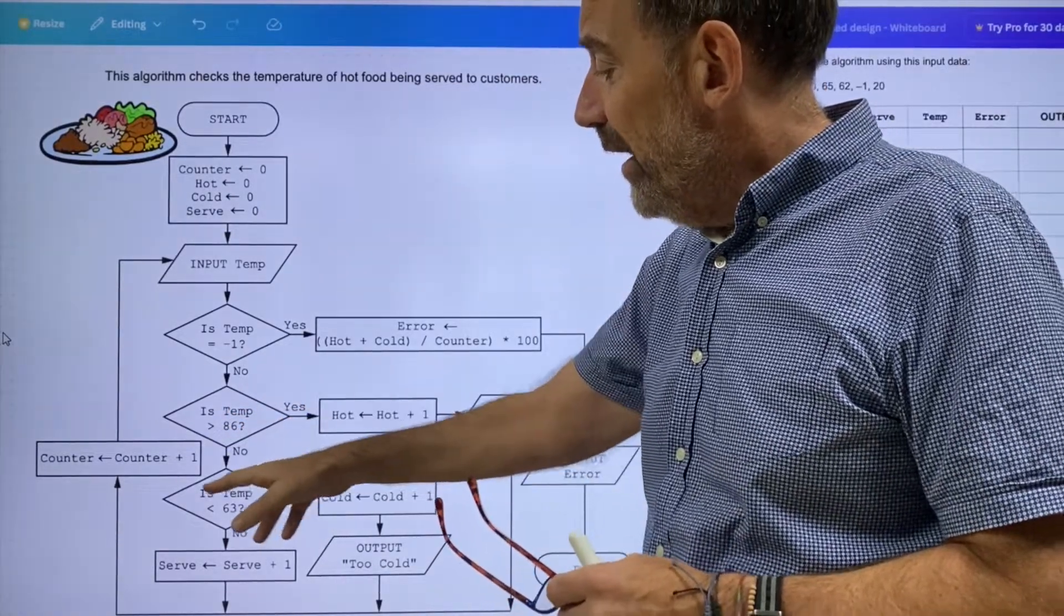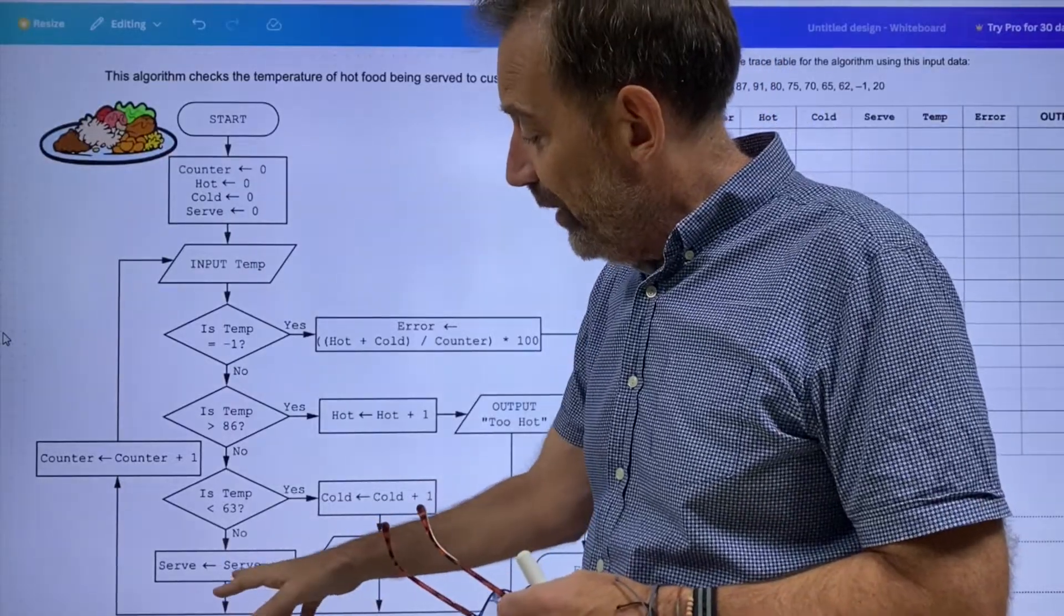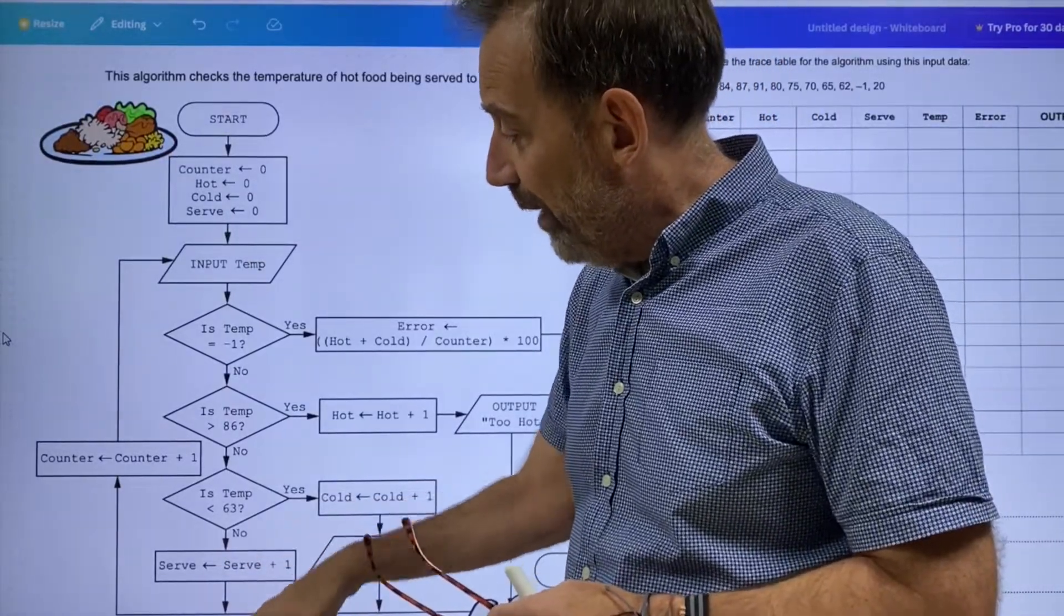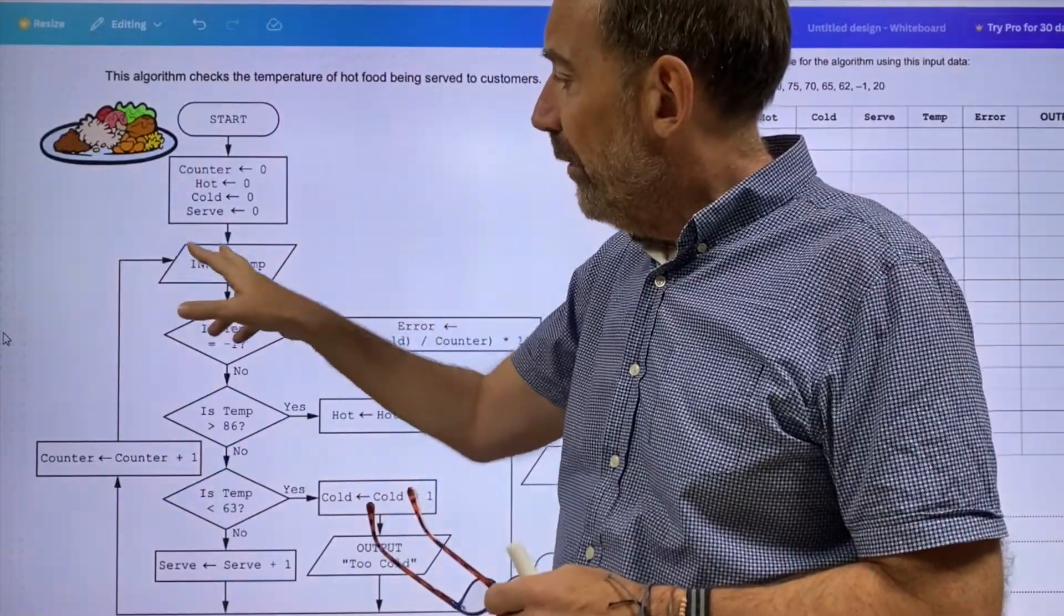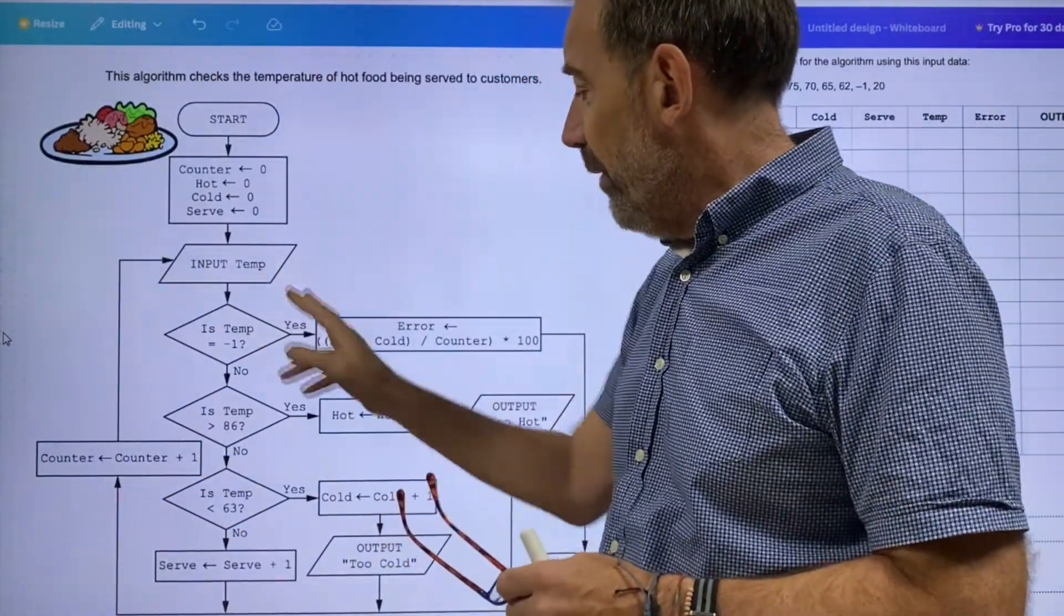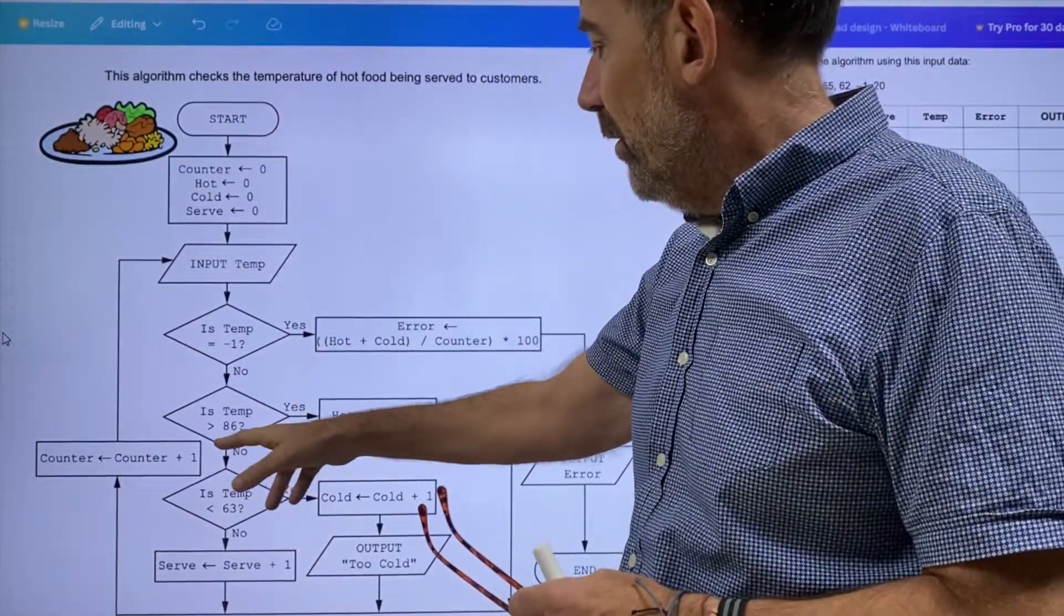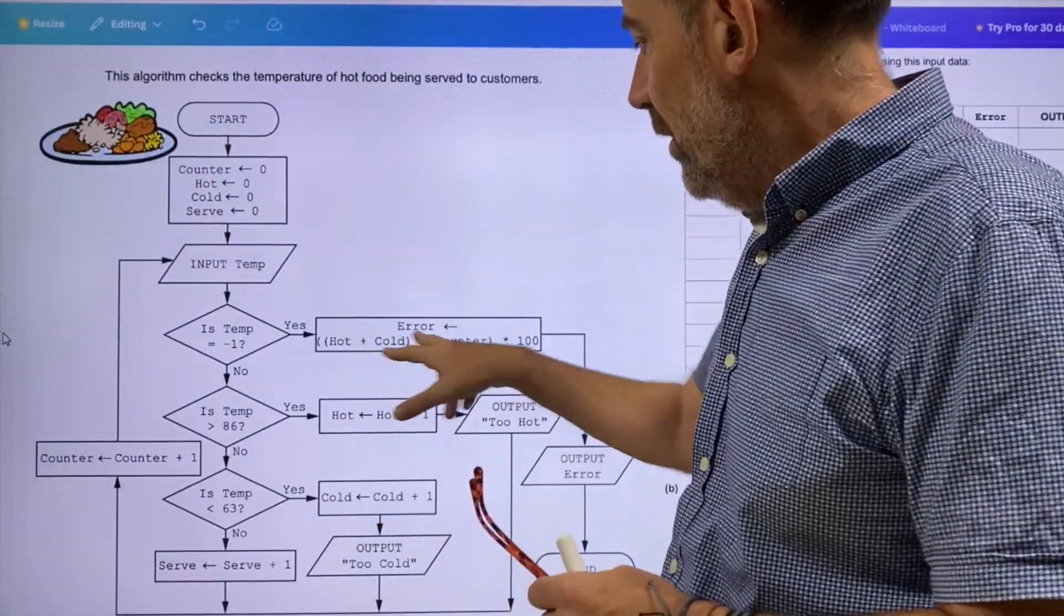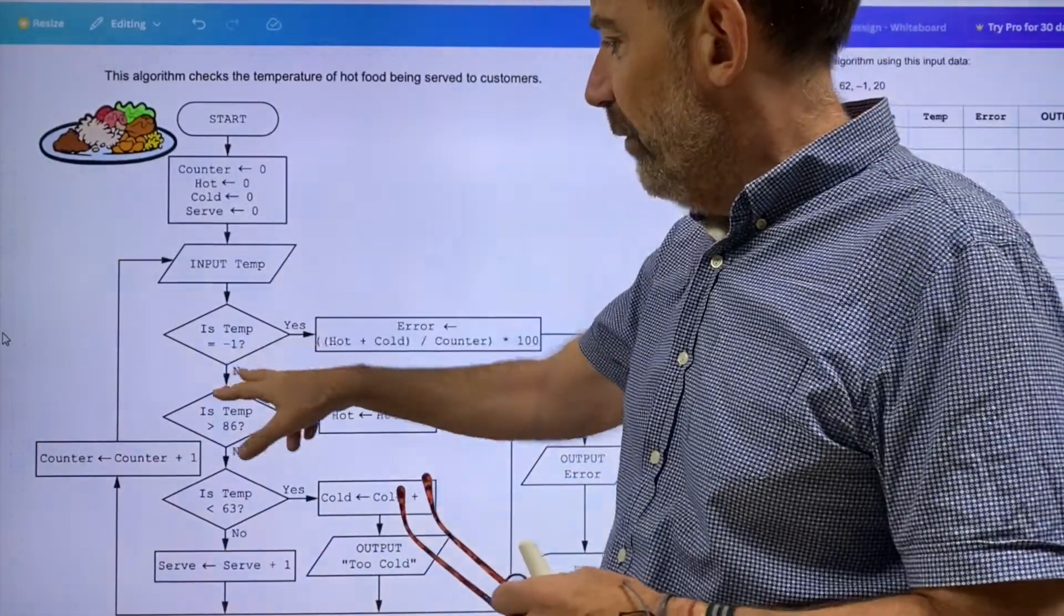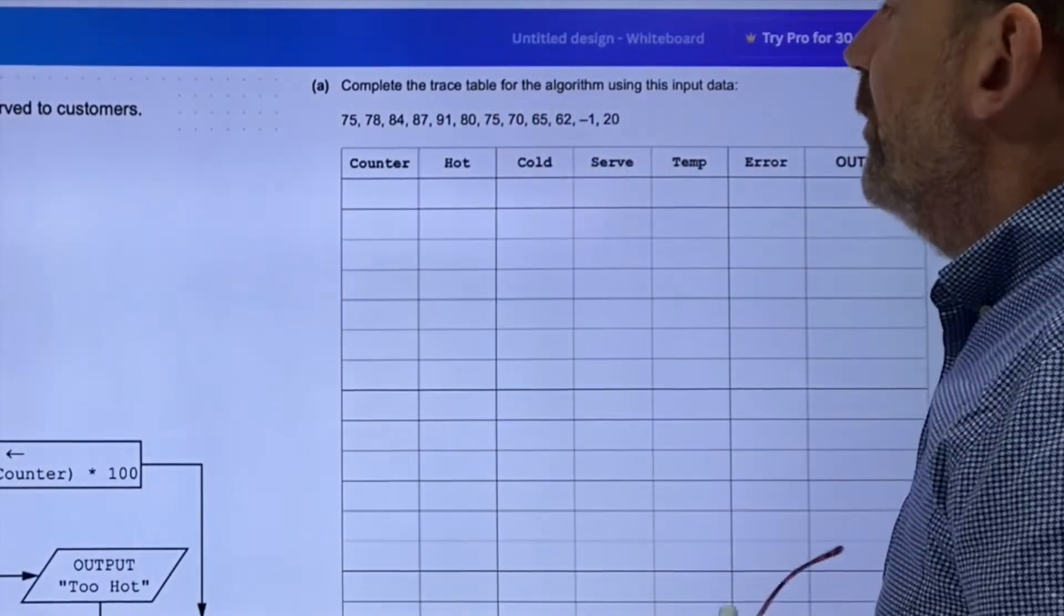We're going to input a temperature. Is the temperature equal to minus one? Yes or no. Is the temperature greater than 86? Yes or no. Is the temperature less than 63? Yes or no. Serve equals serve plus one, back down, update the counter.